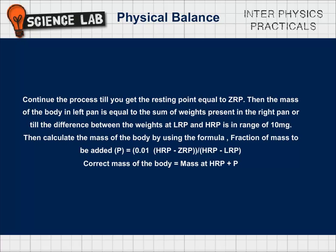Then, the mass of the body in left pan is equal to the sum of weights present in the right pan or till the difference between the weights at LRP and HRP is in range of 10 mg.